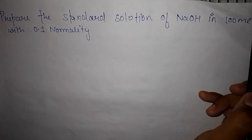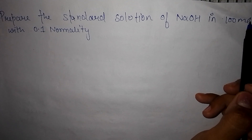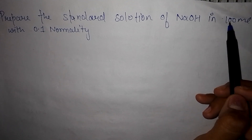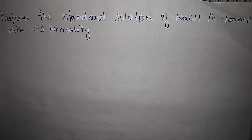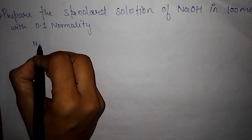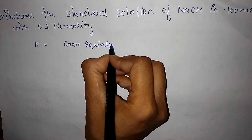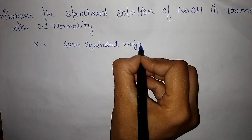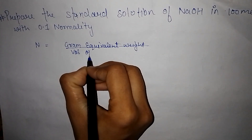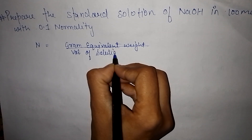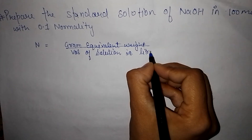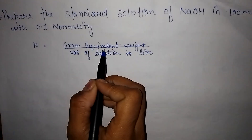So how do we prepare the standard solution? First, we need to find the required mass of solute to add to the standard flask to make a 0.1 normality solution. We will find this using the normality formula: normality equals gram equivalent weight divided by volume of solution in liters.